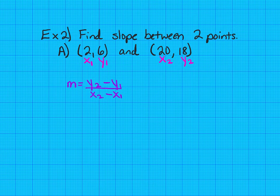Now that we've labeled them, we've got two ordered pairs, each labeled x, y. We plug those values in. Y sub 2 is 18. Write your minus from your formula. Y sub 1 is 6. X sub 2 is 20. X sub 1 is 2.